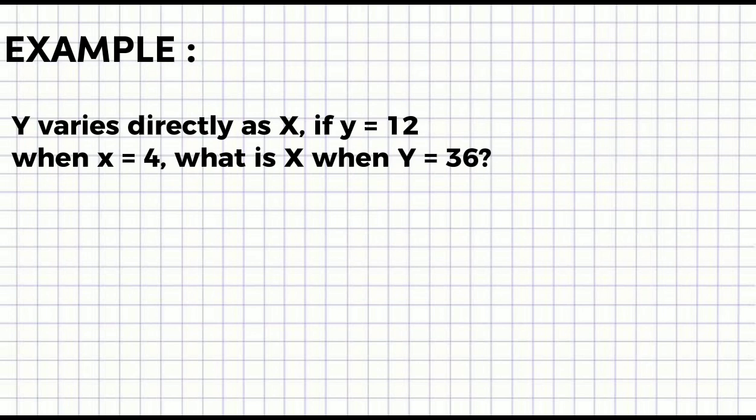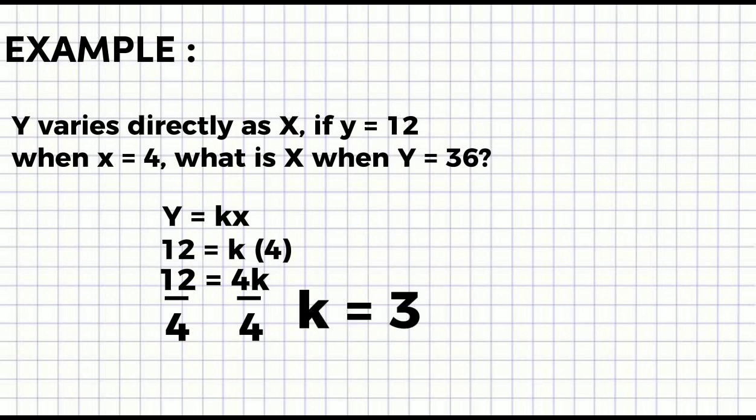Just like what we did earlier, it's the same. We'll still find the constant of variation. The formula is still y = kx. Now, let's solve it. Our y is 12 and our x is 4. So it becomes 12 = k times 4. Now, multiply k and 4. 12 = 4k. Then divide both sides by 4. The answer is 3. k = 3.